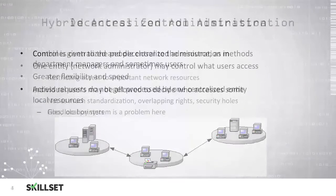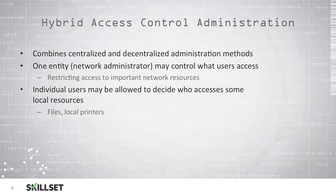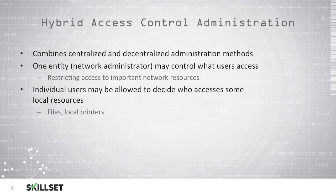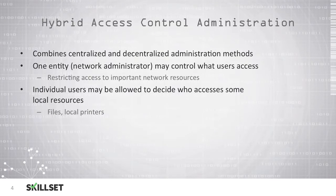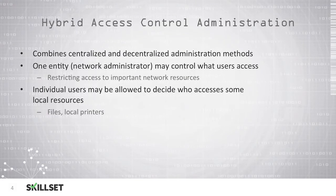We can also have hybrid access control administration, which combines aspects of both centralized and decentralized administration. For example, a network administrator can control what users access and restrict access to certain important network resources, while for less secure resources, individuals can decide who is permitted to access them — such as a printer on a user's desk, where they can allow a co-worker in the next cubicle to print to that printer.